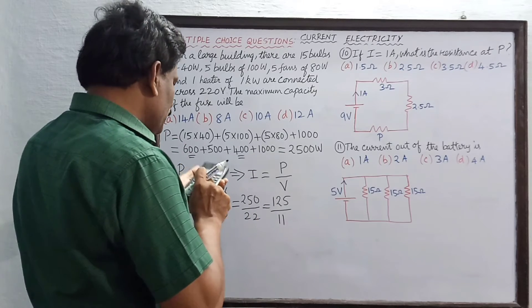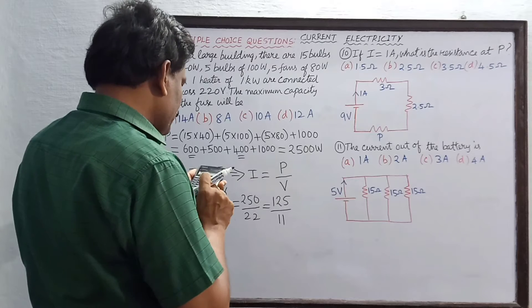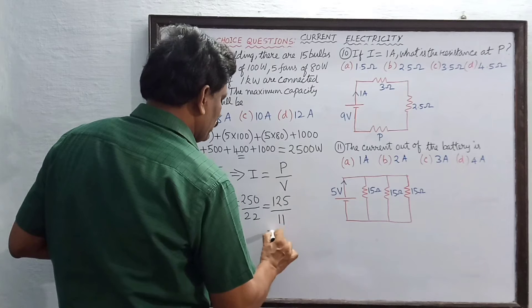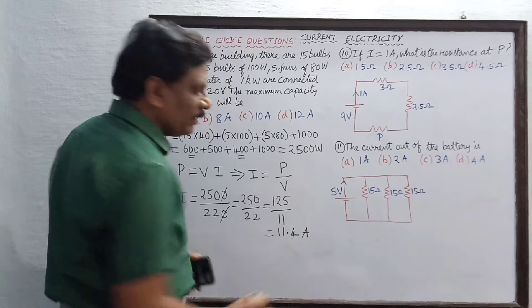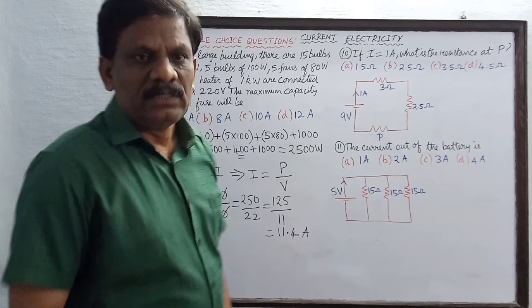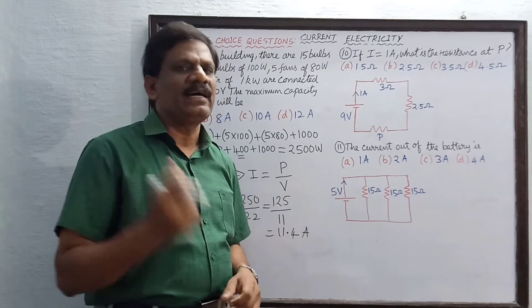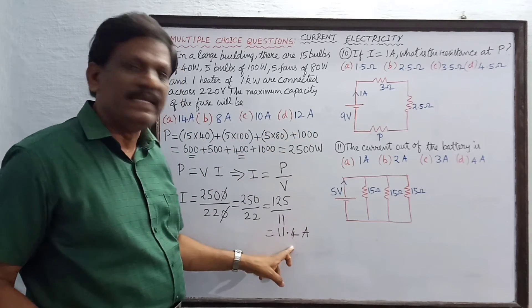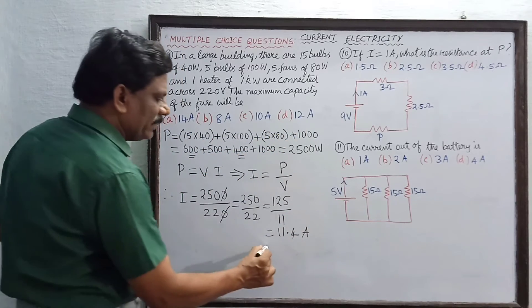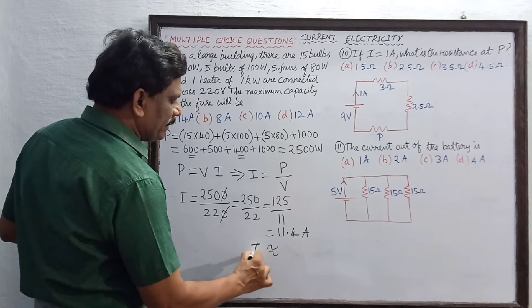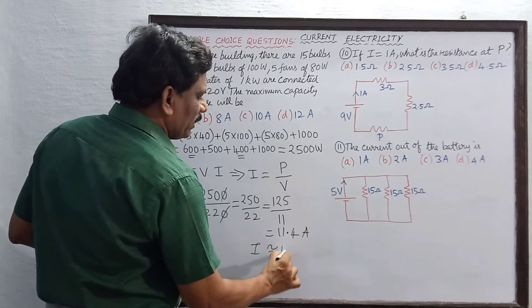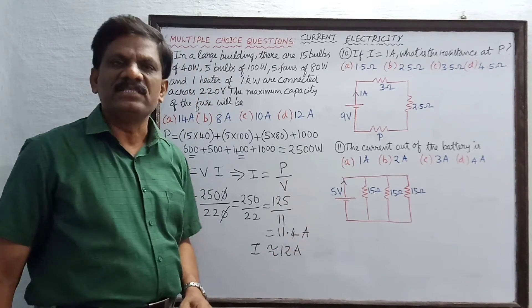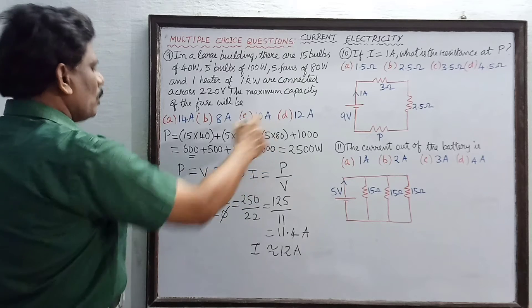125 divided by 11 gives approximately 11.4 amperes. For safety purposes, we take the next nearest higher value, which is 12 amperes. So the fuse must carry a current of 12 amperes — this is the maximum capacity of the fuse. Therefore, option D is correct.